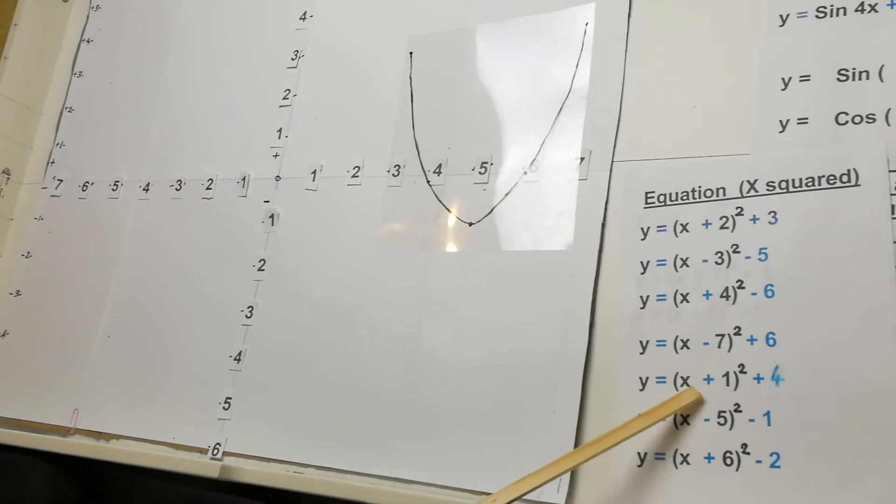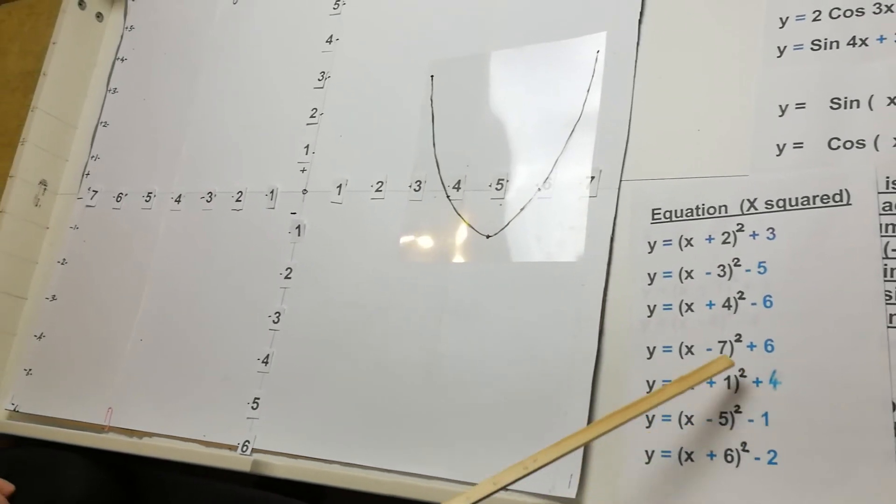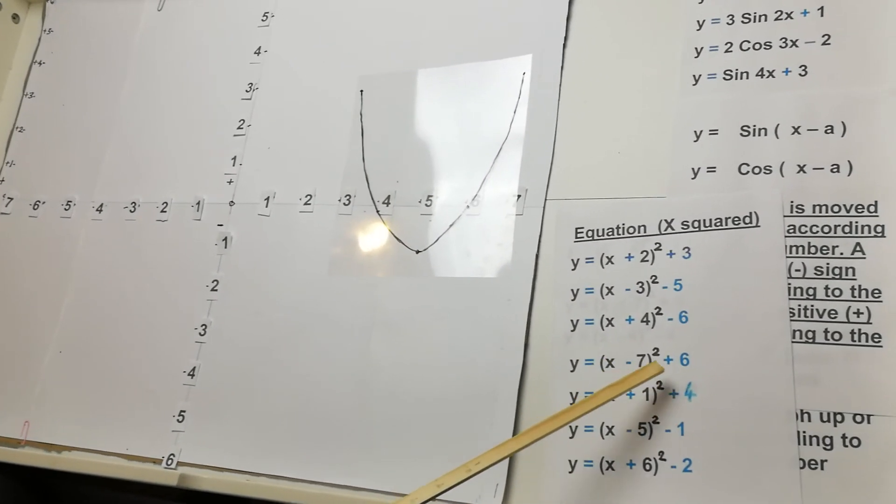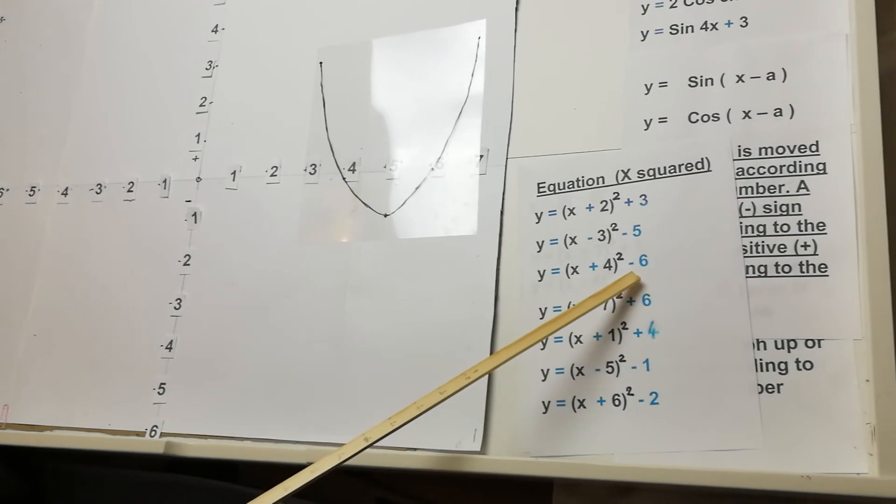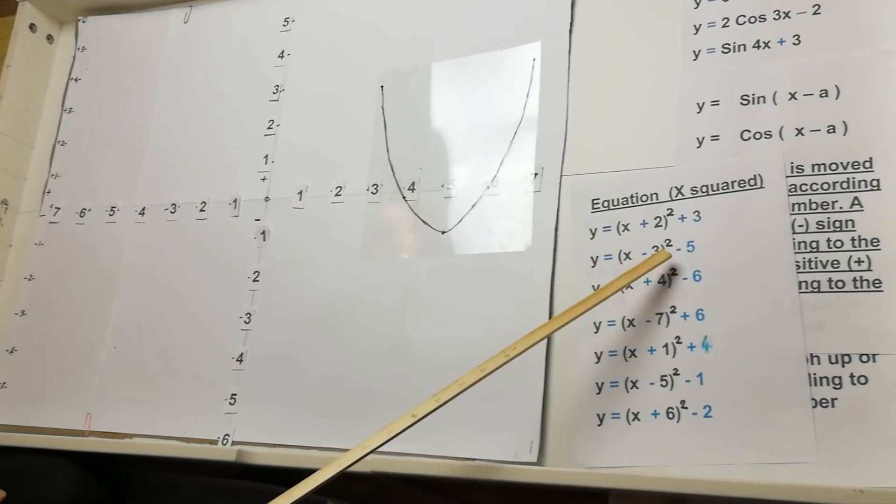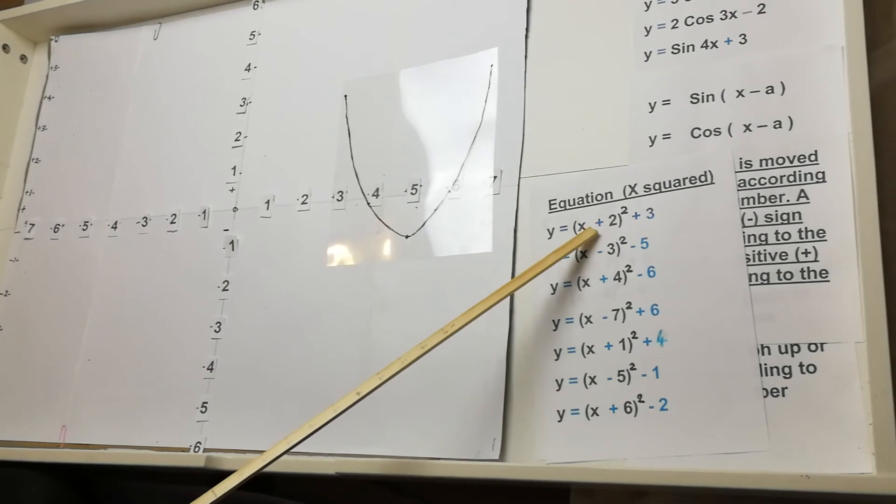Your turning point here, negative 1, 4. This one, 7, 6. Negative 4, negative 6. 3, negative 5. Negative 2, 3.